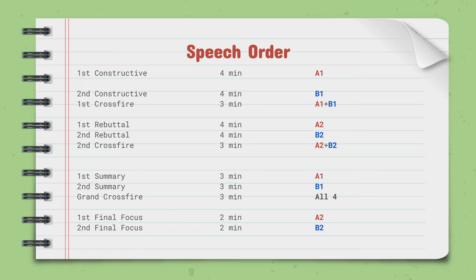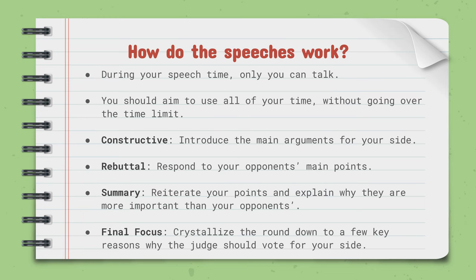After the two rebuttals, there's a crossfire between the people who just spoke. Crossfires — other than grand crossfire — are usually between the people who just spoke, and they're always three minutes. Then there's summary speeches, both three minutes. Afterwards, there's a grand crossfire where all four debaters in the round can ask each other questions. Then there are two final focuses. Summary is given by the first speaker and final focus by the second speaker. So when you have a team of two people, nobody speaks twice in a row — the first speaker talks, then the second speaker talks, then the first speaker, then the second speaker.